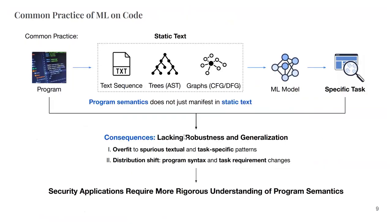If you look at how existing large language models for code are developed — even recent state-of-the-art models like Code Llama — they still treat programs as some form of static text like natural language. However, programs are not like natural language; the semantics of a program manifest in its behavior and execution. Learning only on static text results in the model overfitting to spurious, shallow textual keywords and failing to generalize to new programs when syntactic patterns no longer exist.